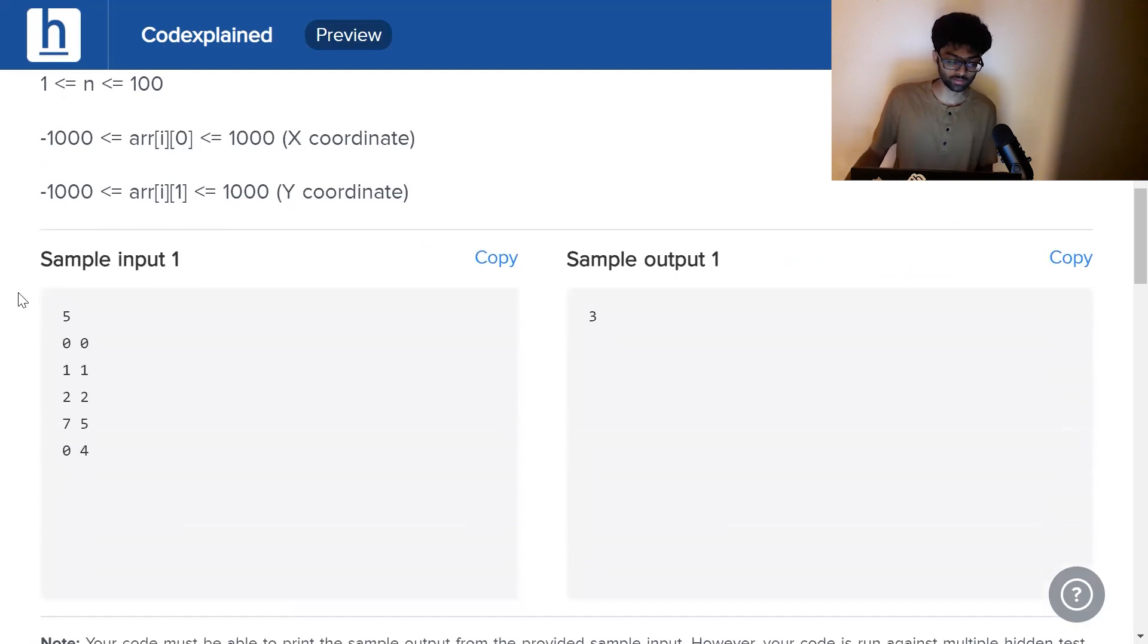Here we can see our input is 5, meaning there are 5 points. Each point is represented by an xy coordinate: 00, 11, 22, 75, and 04.